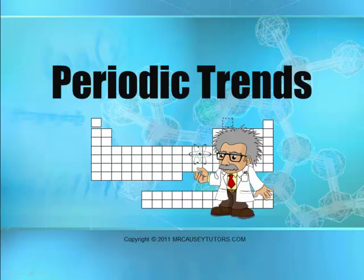Howdy everyone. Mr. Kazi here again with another chemistry lesson. This time we're going to talk about periodic trends. The importance of periodic trends is to help us make decisions with bonding and chemical reactions. I especially want you to pay attention to electronegativity. So let's get started.